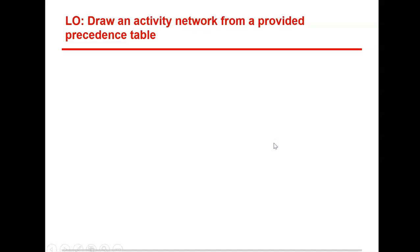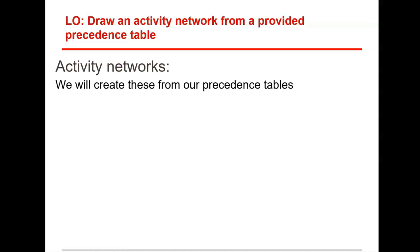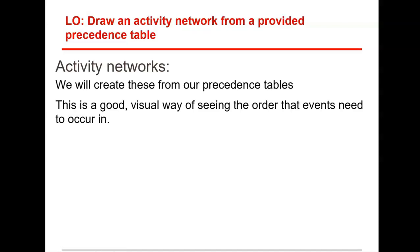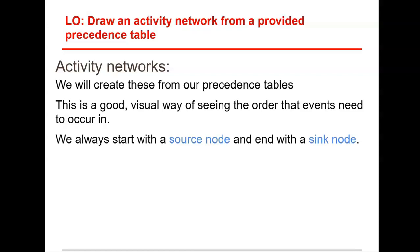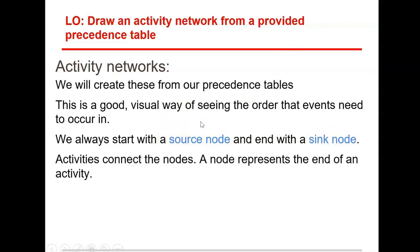Let's get straight into it then. Activity networks — we create these from precedence tables and it's a good way to visualize or see the order that events are meant to occur. We always start with a source node and end with a sink node. Good to memorize what these mean: the sink node is just the last one and the source node is the first one. Activities connect the nodes, and a node represents the end of an activity — the source node doesn't, but every other node does.